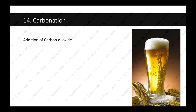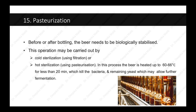The next step is carbonation — the addition of carbon dioxide to the beer. After carbonation, the next step is pasteurization. Before or after bottling, the beer needs to be biologically stabilized. This may be carried out by cold sterilization using filters or hot sterilization using pasteurization. In this process, the beer is heated up to 60 to 66 degrees Celsius for less than 20 minutes, which kills bacteria and remaining yeast that may allow further fermentation. It is important for the beer to be pasteurized so that the yeast responsible for fermentation cannot cause further fermentation after bottling.